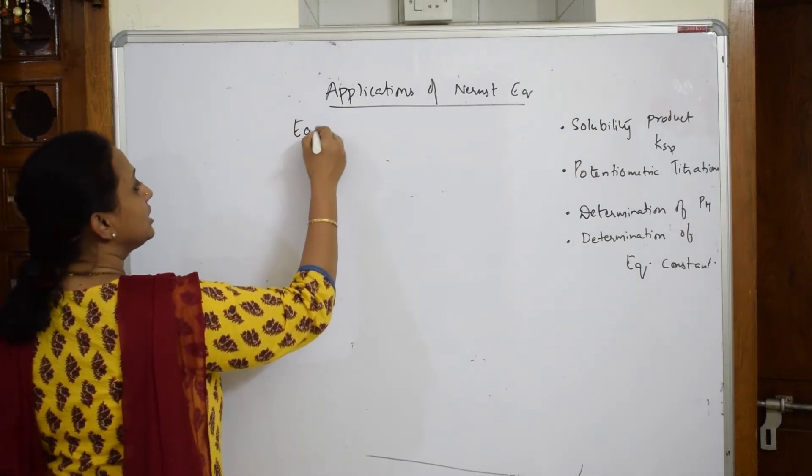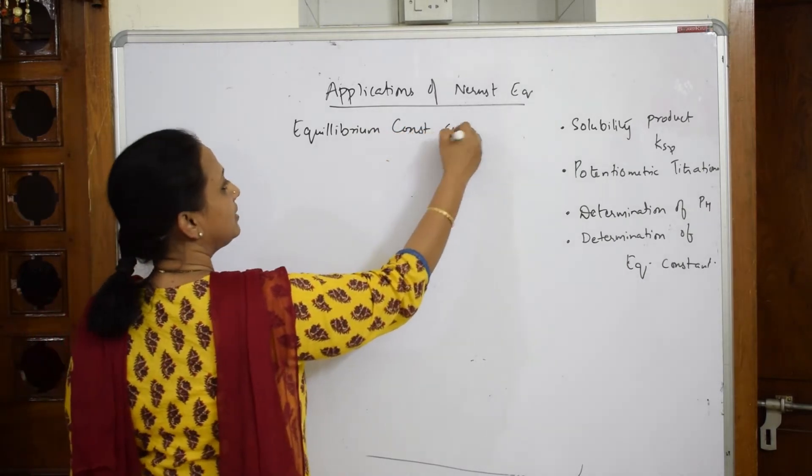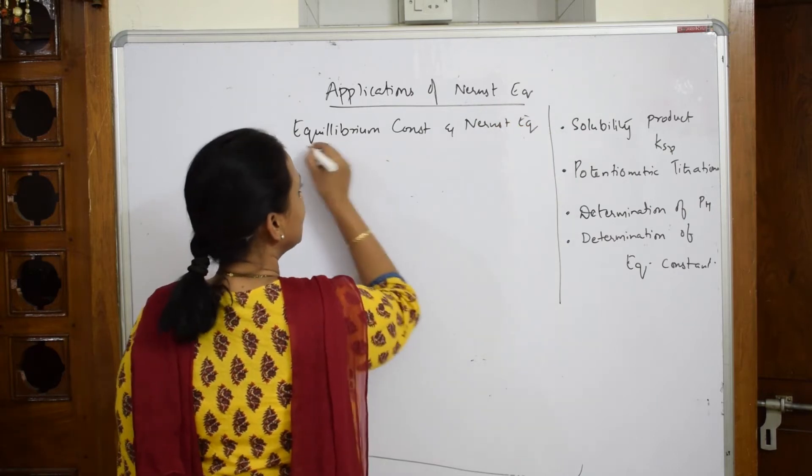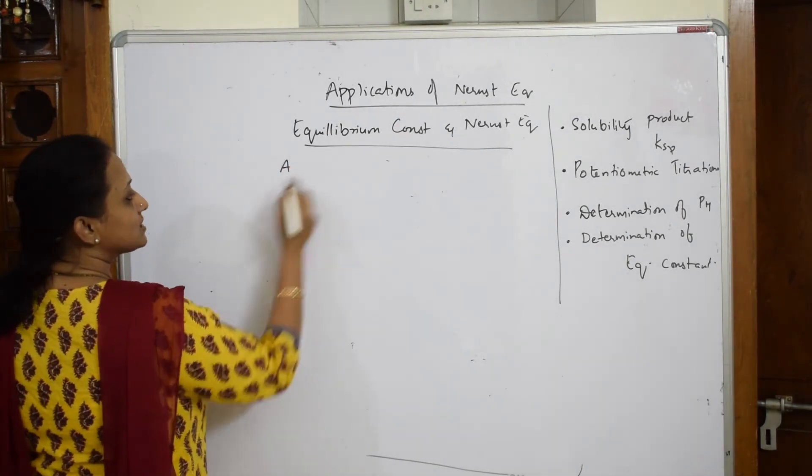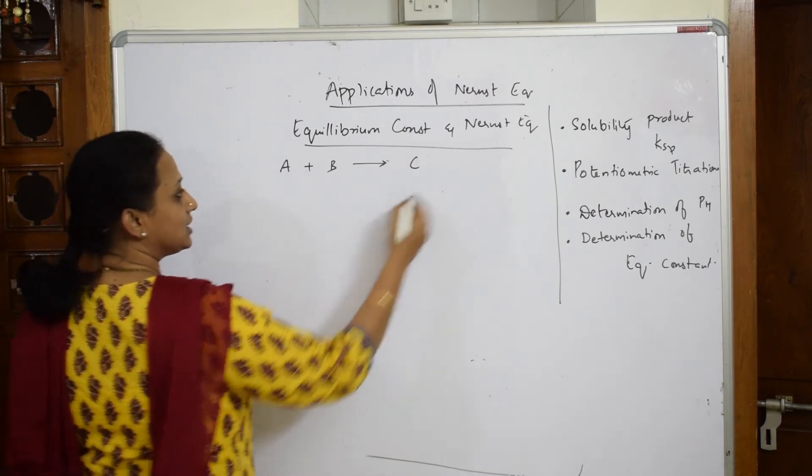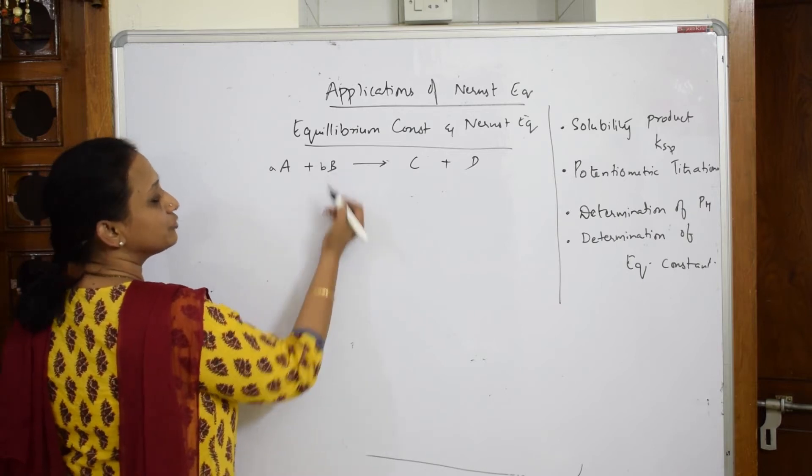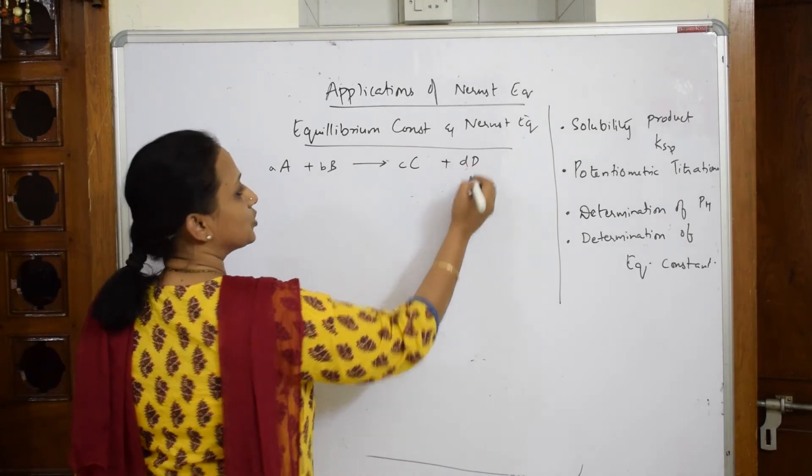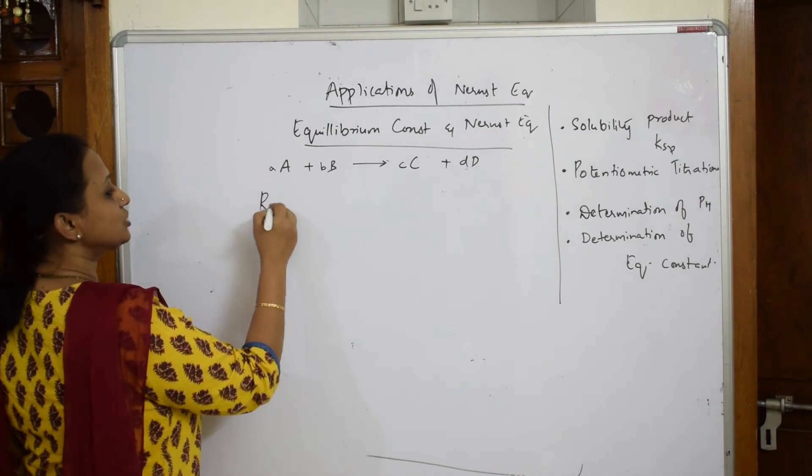We write equilibrium constant and the Nernst equation. So we are going to relate both. Now basically if I have to speak about a reaction, I have a reaction capital A. This is reacting with capital B. It is going to give us product C and one more product D. The coefficients of this is small a, the coefficient of B is small b, coefficient of C is small c and small d when you balance the stoichiometric equation.